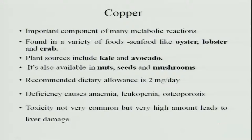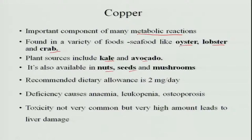Copper is another minor mineral required by the body and has a very important role in all metabolic reactions. It is found in a variety of foods like oyster, lobster, and crab. Plant sources include kale and avocado, and it is also available in nuts, seeds, and mushrooms. The recommended dietary allowance is only 2 milligrams per day.